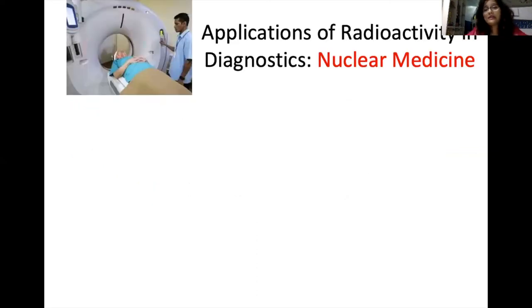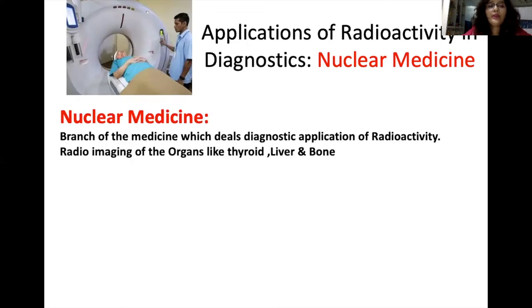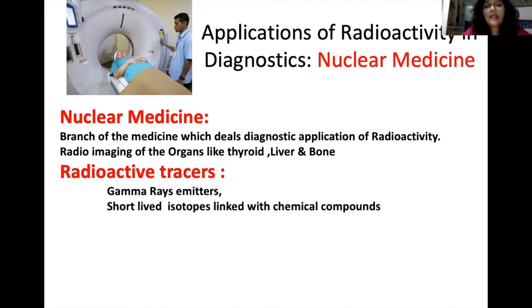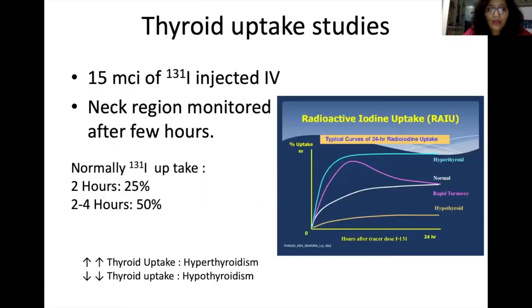The second field where radioactivity is used is diagnostics, in a branch known as nuclear medicine. Nuclear medicine is the branch of medicine which deals with the diagnostic application of radioactivity, including radio imaging of organs like the thyroid, liver, and bone. Radioactive tracers are used here, mostly gamma ray emitters, with the ideal property of being short-lived isotopes linked with compounds.